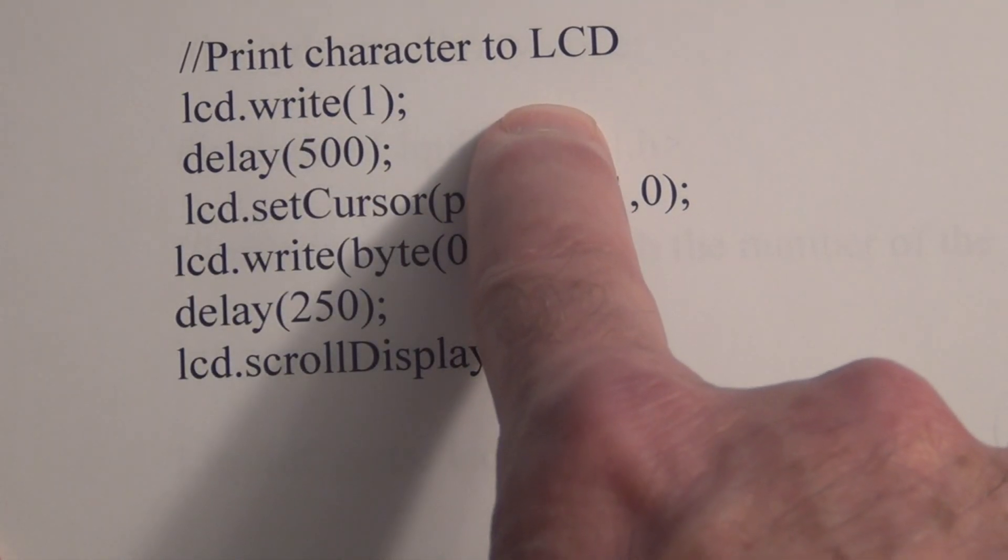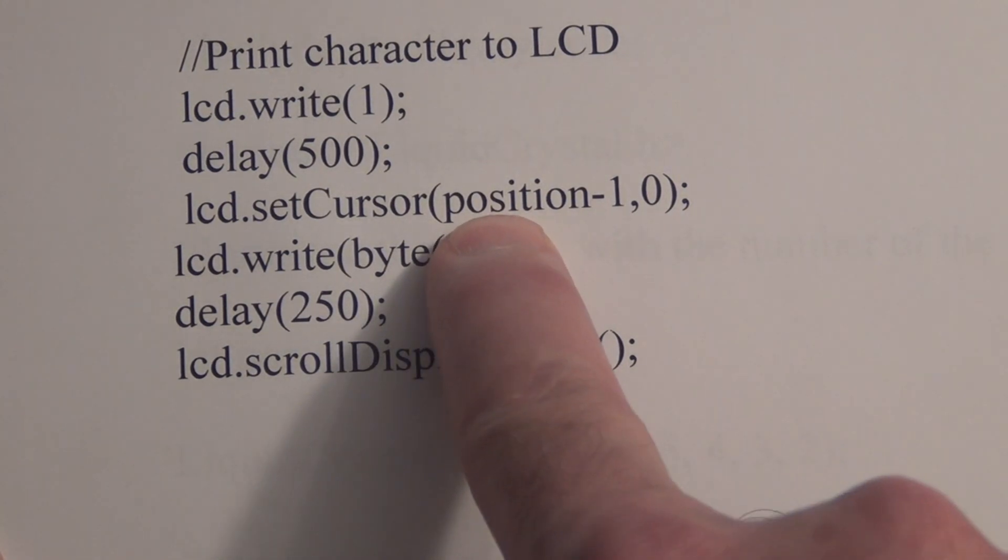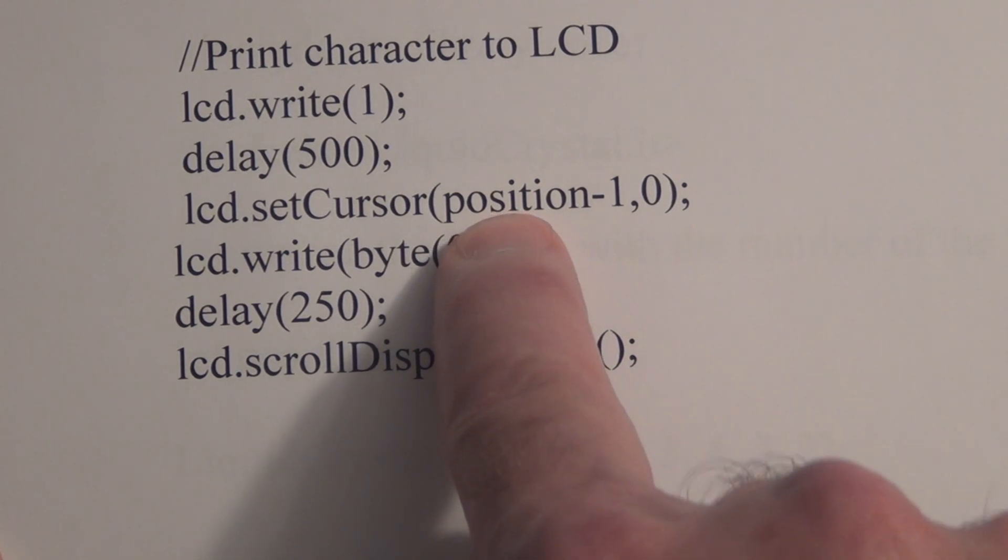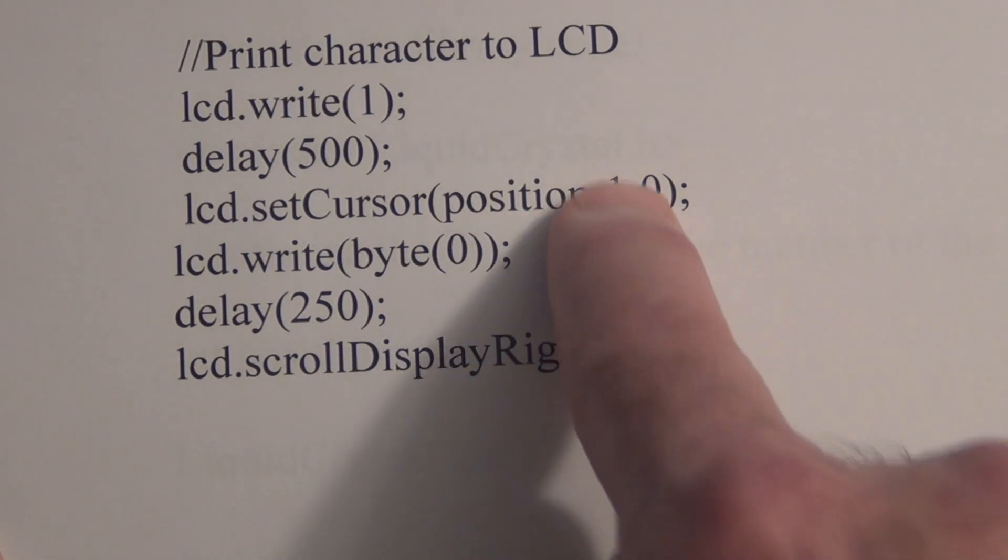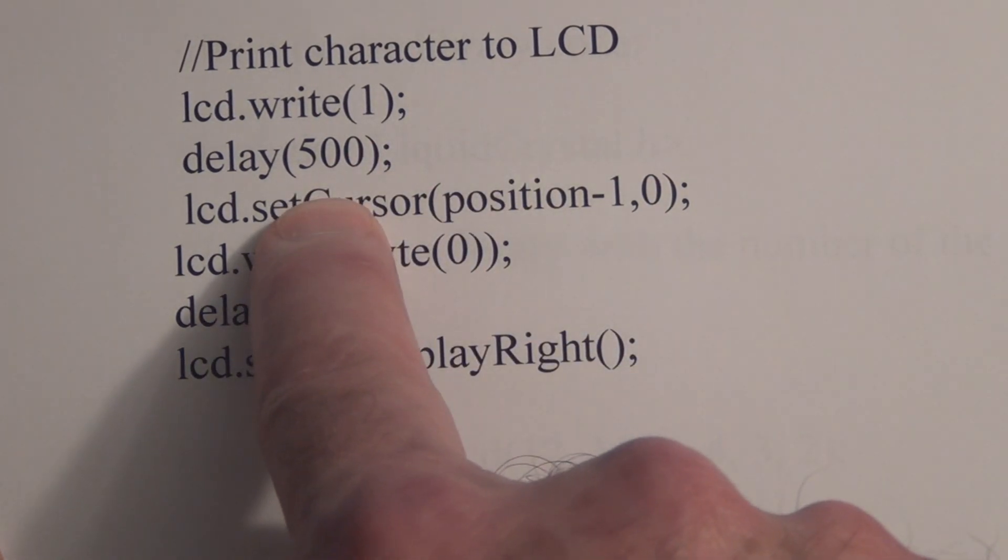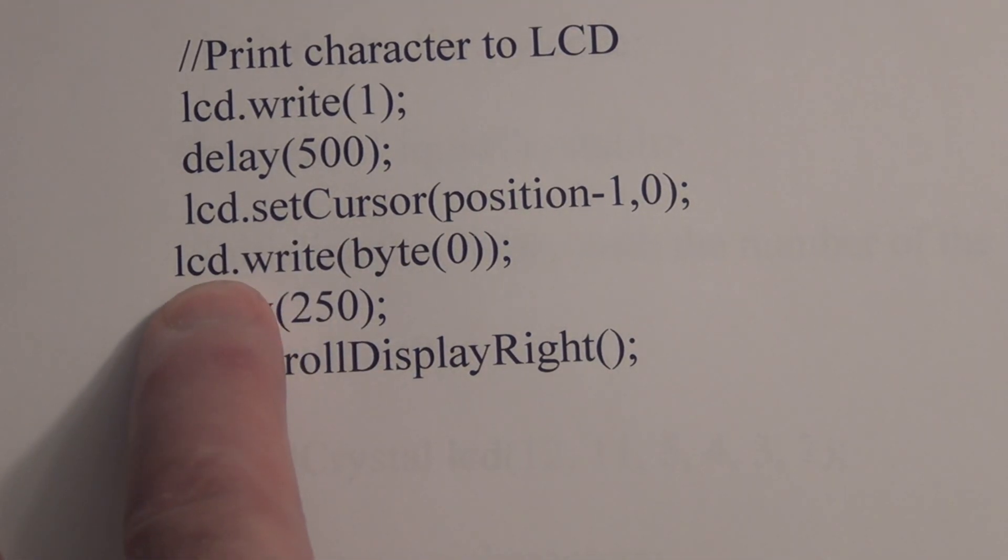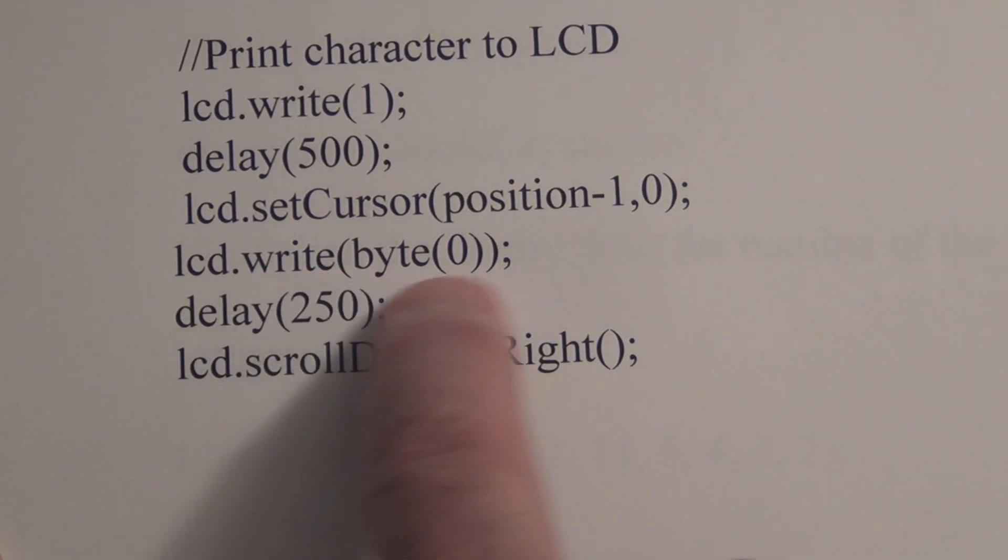So it's now in position one zero. What I have to do is I started off with position equal to zero and it gets incremented to one. Now I'm going to take away one to get it back to that square, the zero zero position. Once it's back to that square I do an LCD write.